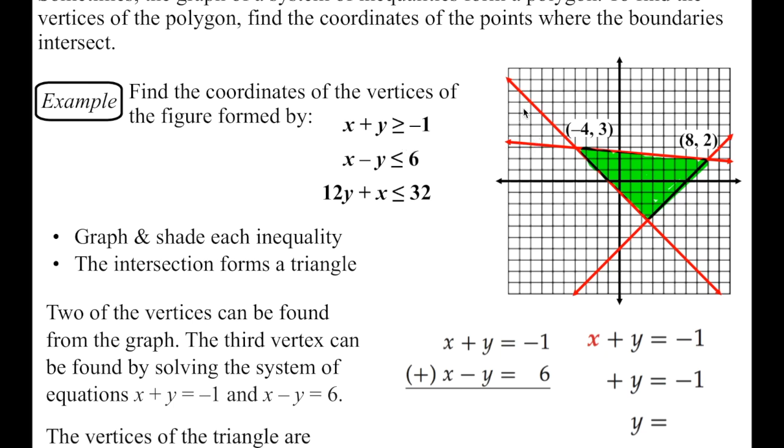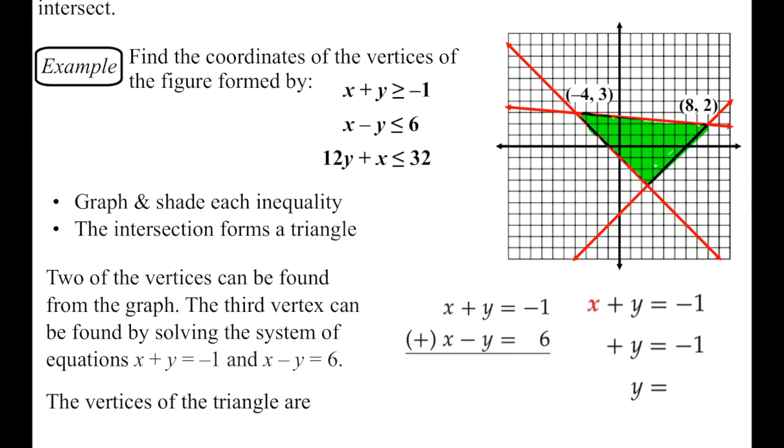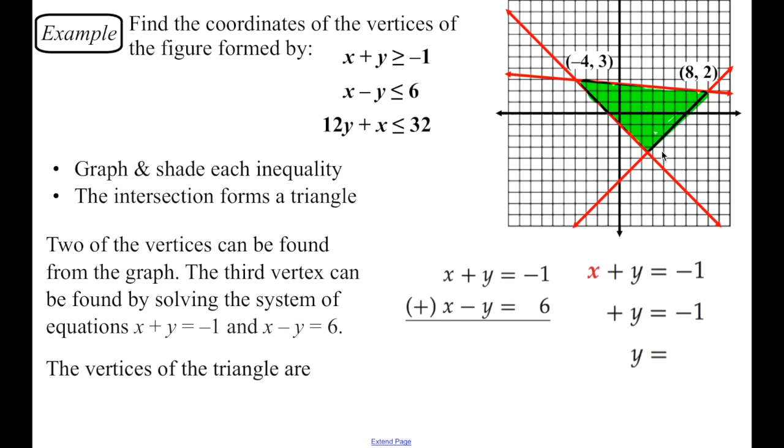The negative 1 slope is right here, so that represents the first inequality crosses at negative 1 right here. The second inequality crosses at negative 6 down here, so that's this line right here. These are all solid lines. And then the top line here is the 12y plus x less than or equal to 32. So it's real easy if you graph carefully. These two crossed exactly on a point, so we can get those two vertices easily enough. But the vertex down here is not so easy to figure out because it's kind of in the middle of a box. So we don't know what those coordinates are.